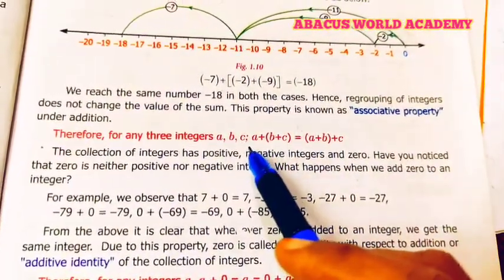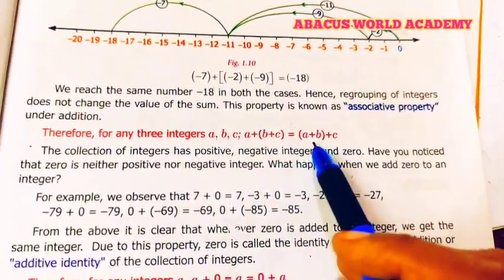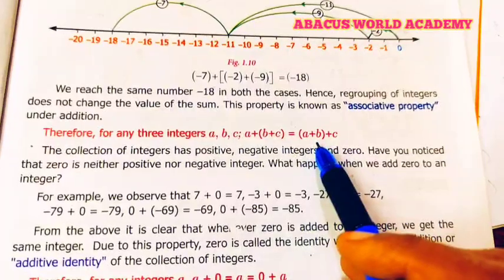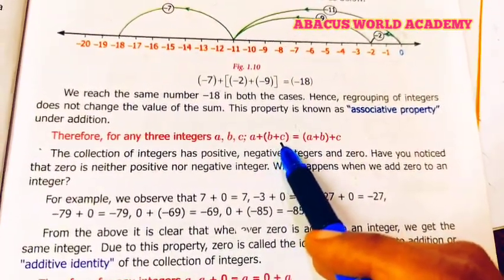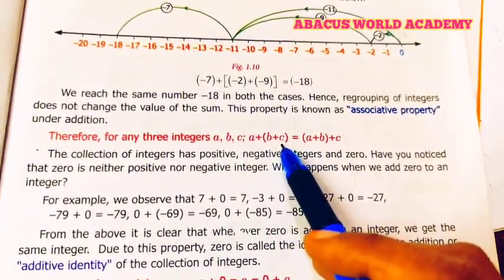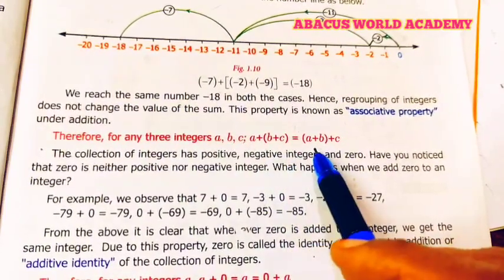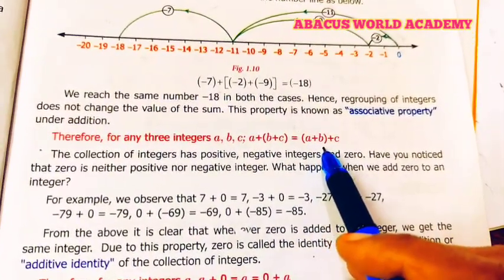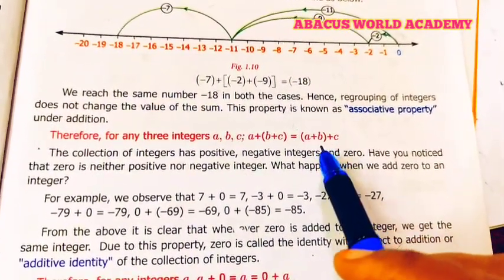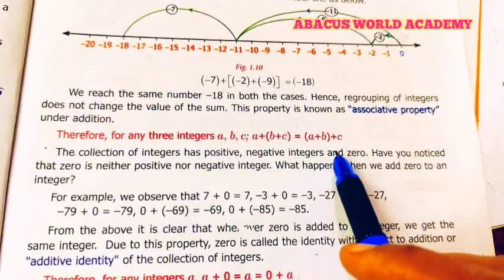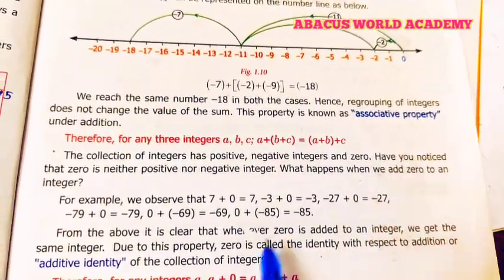Associative property: a plus b plus c is equal to (a plus b) plus c. First add b plus c, then add a — you get one answer. Next add a plus b first, then add c — you get the same answer. Both give the same value. That is the associative property.